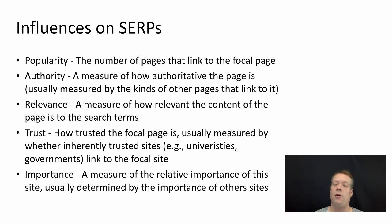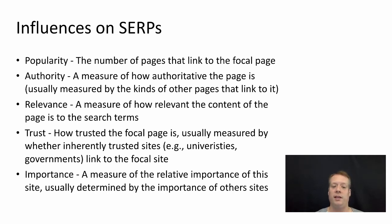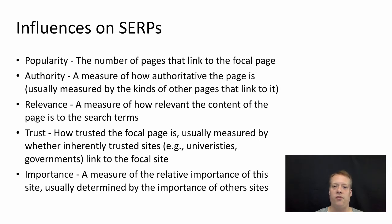In some cases, these sites will link and they will add what's called a nofollow tag, which indicates that they are not actually endorsing that particular page. But in general, these kinds of links will serve in this measure. And then there's importance — a measure of the relative importance of that site — which is usually determined by the importance of other sites that link to it. I'll show you an example of that as we talk through how the PageRank algorithm, which is one of the basic algorithms that underlies a lot of this, works.